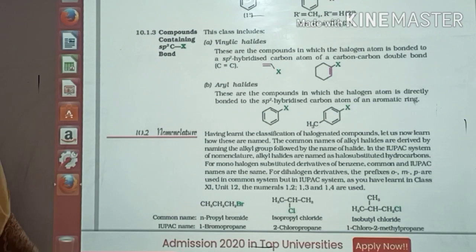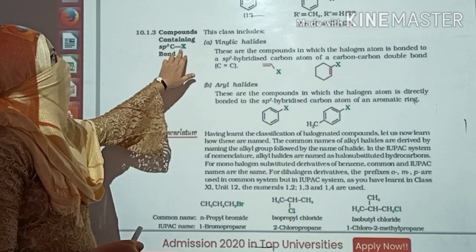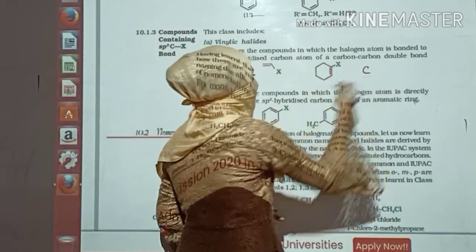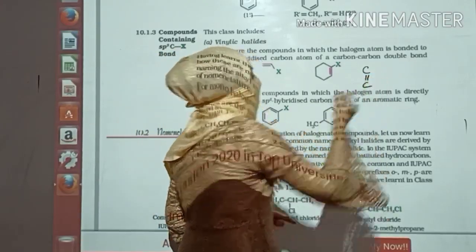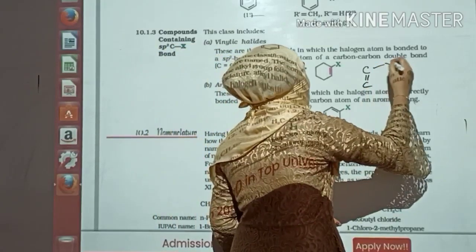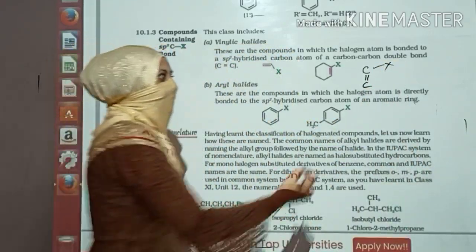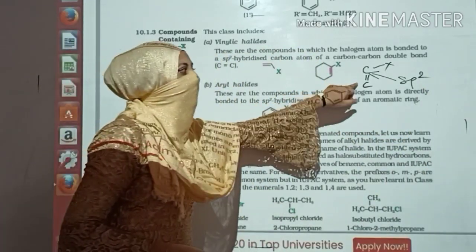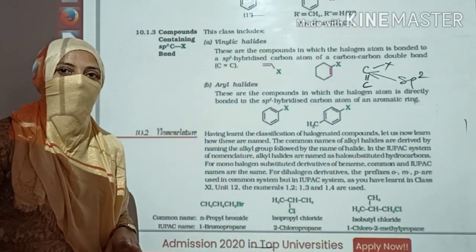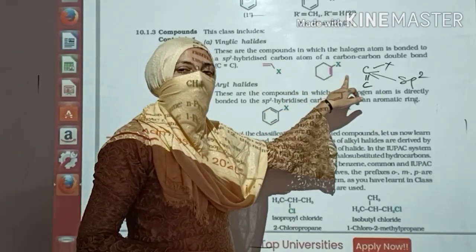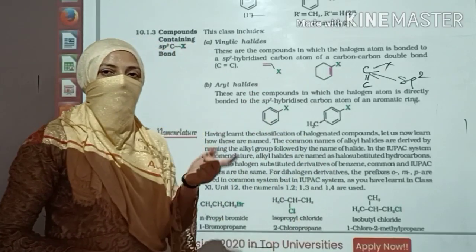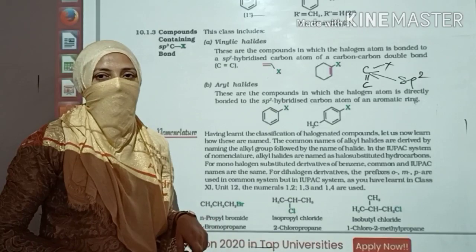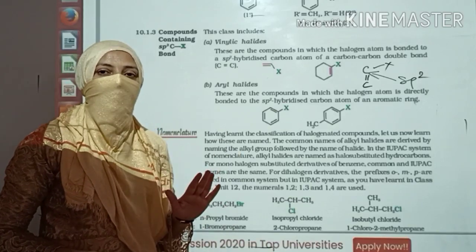Now we are able to see compound containing SP2 CX. SP2 CX means a carbon which is directly involved in double bond formation and is having X attached. To recall: carbon-carbon single bond is SP3 hybridized; carbon-carbon double bond is SP2 hybridized; carbon-carbon triple bond is SP hybridized.